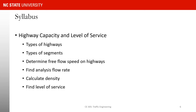Chapter six deals with highway capacity and level of service. We become familiar with different types of highways — freeways, multi-lane highways, and two-lane highways — and different types of segments on a freeway facility: basic segments, weaving segments, and merge and diverge segments. We learn how to determine free flow speed on highways, how to find analysis flow rate, calculate density, and find the level of service.